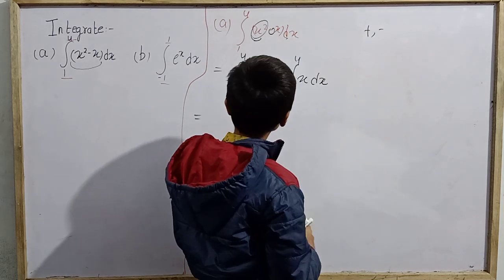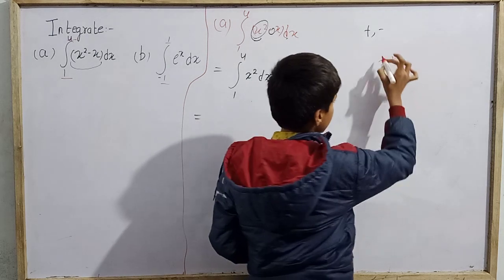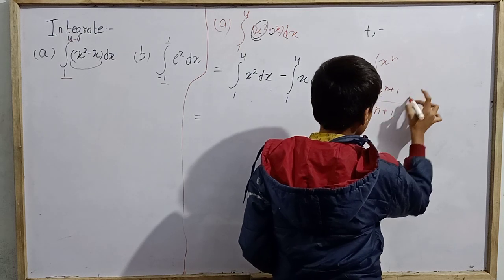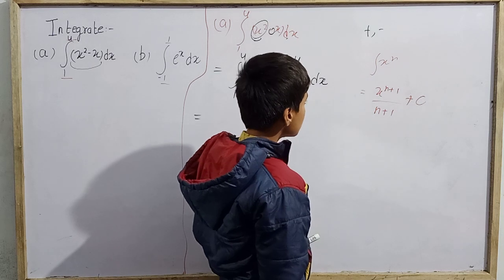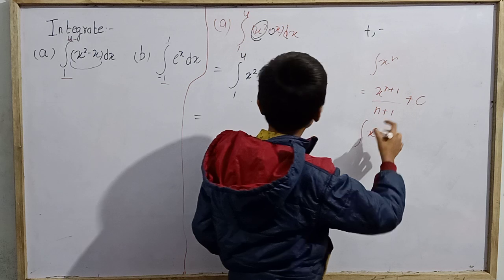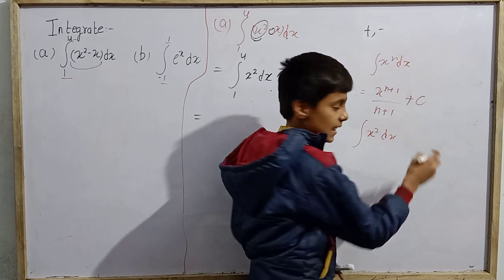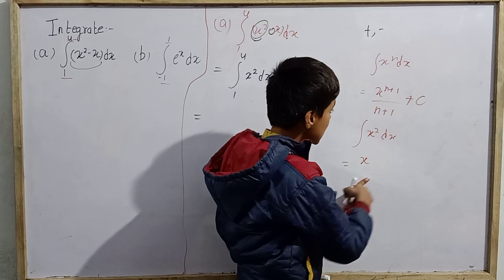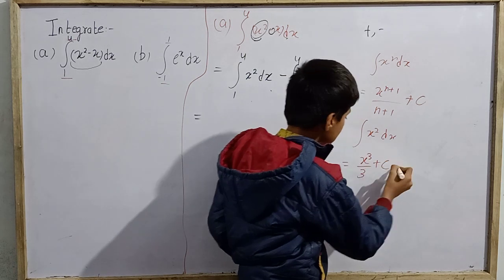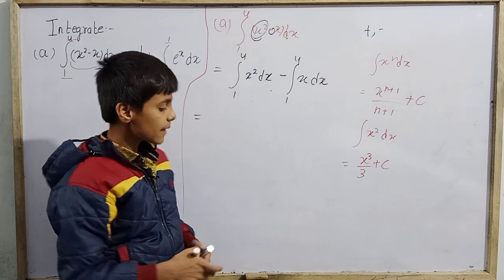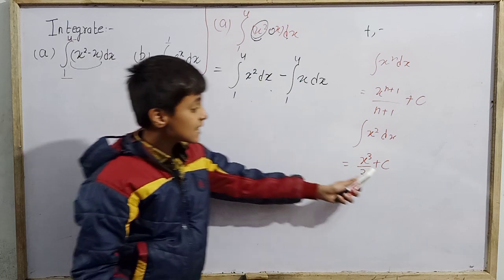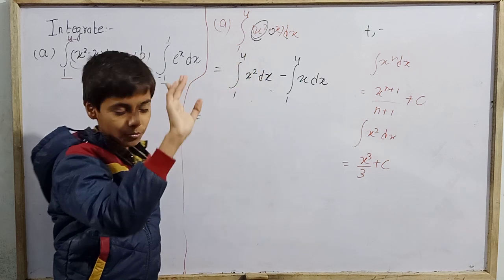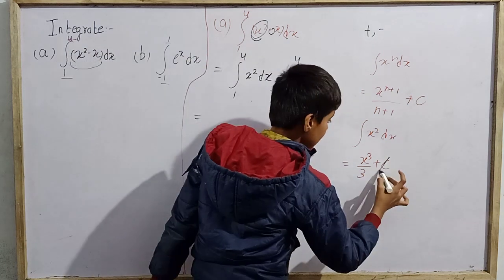The formula used here: indefinite integral of x^n is x^(n+1) divided by (n+1) plus constant of integration c. Since we are performing definite integration — with lower limit 1 and upper limit 4 — we do not need to add the constant of integration c.